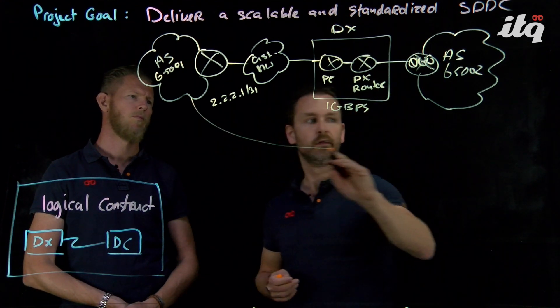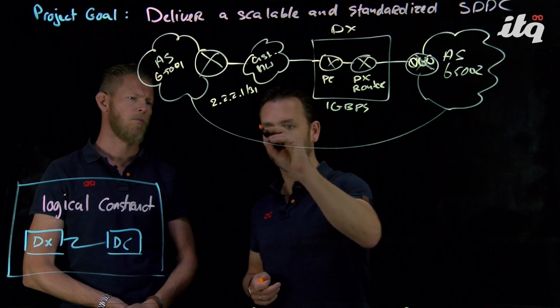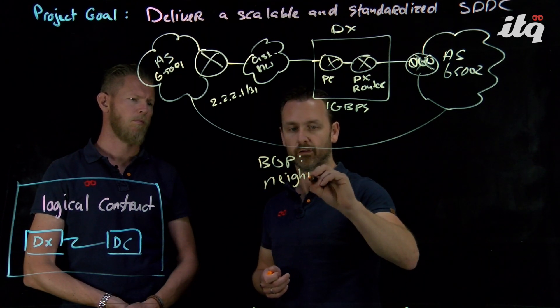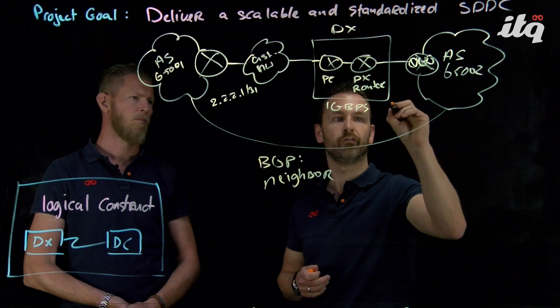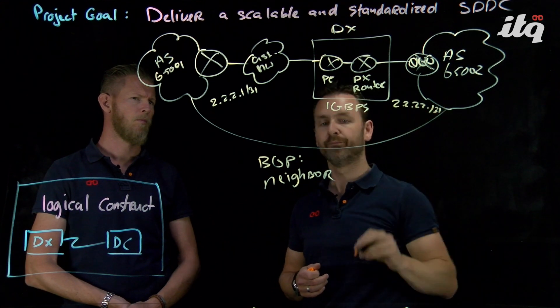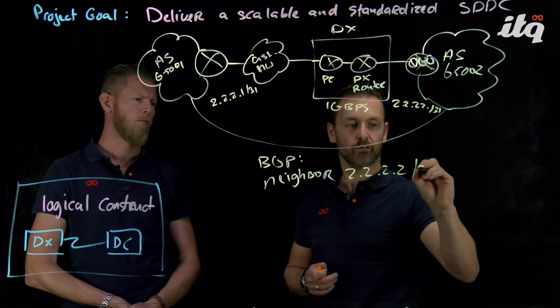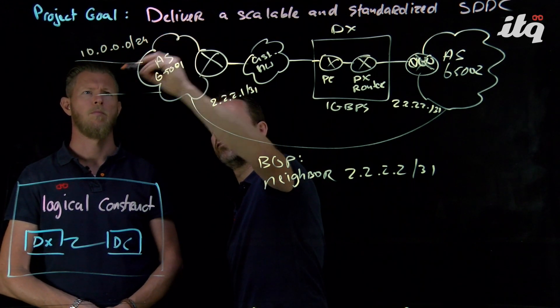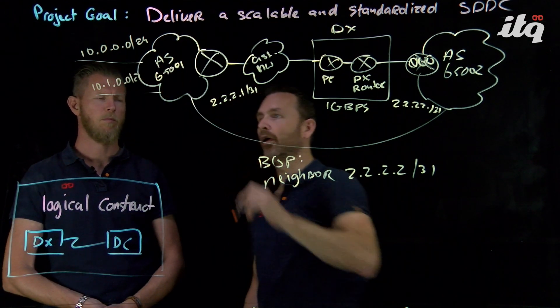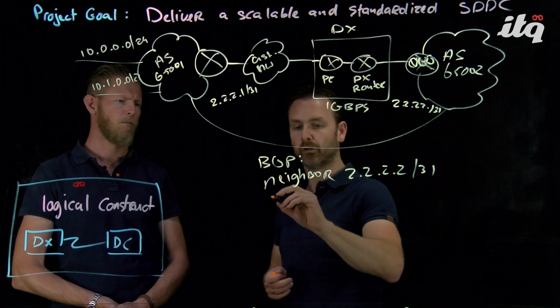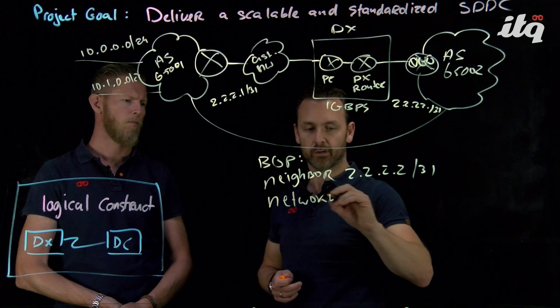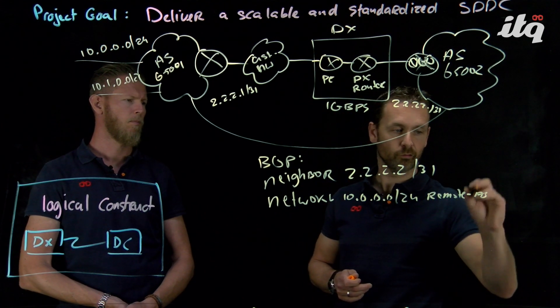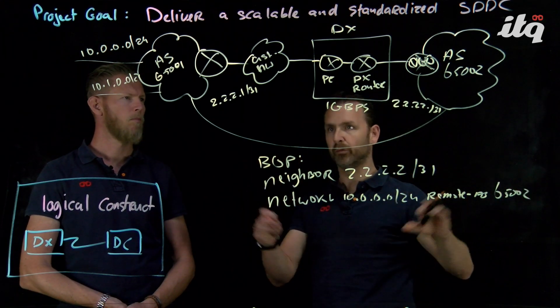And we need to set up BGP peering. So all the stuff that the engineer needs to do peering. So we need to put in the BGP configuration. We need to configure the neighbors. So this is the configuration for the on-prem router. So let's say we have 2.2.2.2 slash 31 here, 2.2.2.0 slash 31. Of course, we have some on-prem networks here. So let's say we have 10.0.0.0 slash 24 and 10.1.0.0 slash 24. And we need to propagate those networks. We need to advertise them into the BGP protocol. So we need our network statements here. 10.0.0.0 slash 24 remote AS 65002, etc. You get the idea. It's not about the BGP configuration itself.